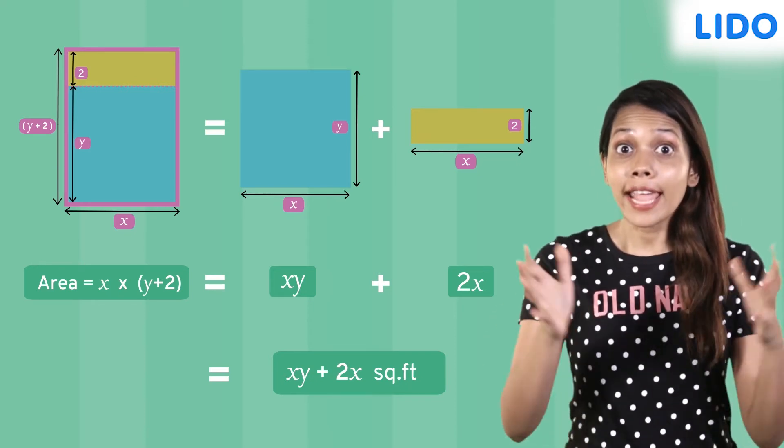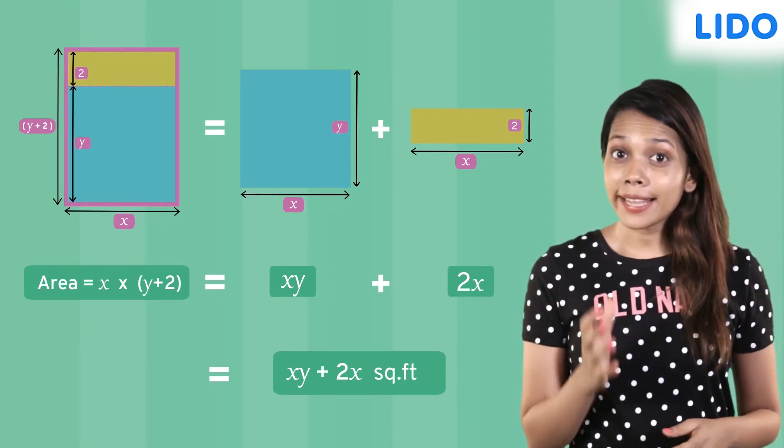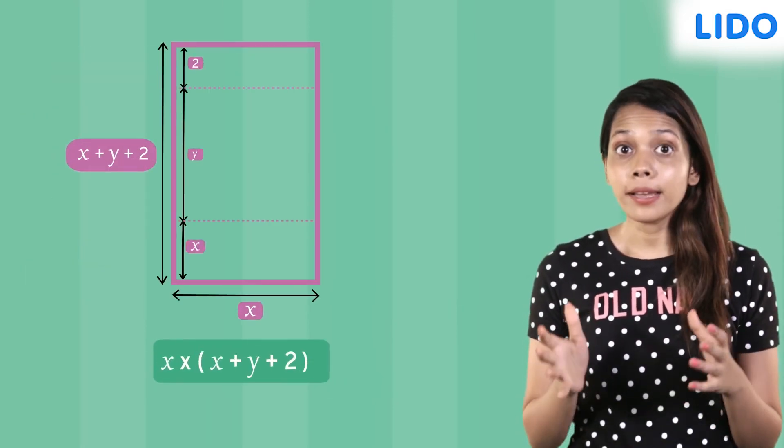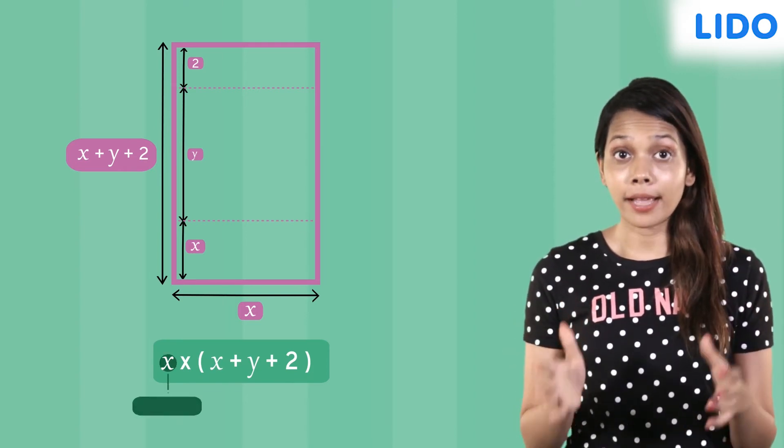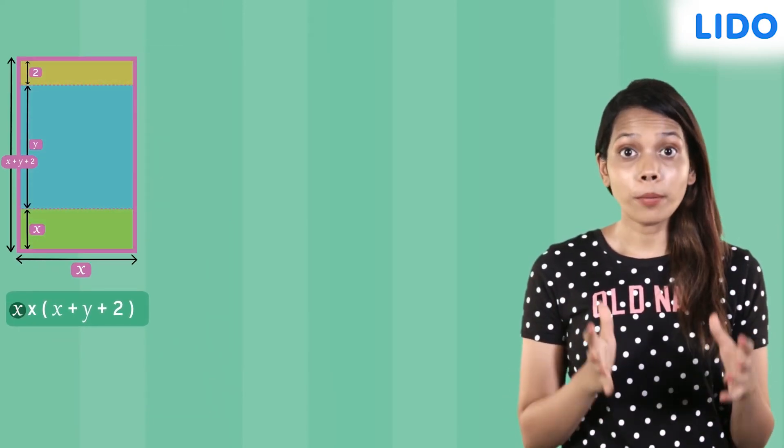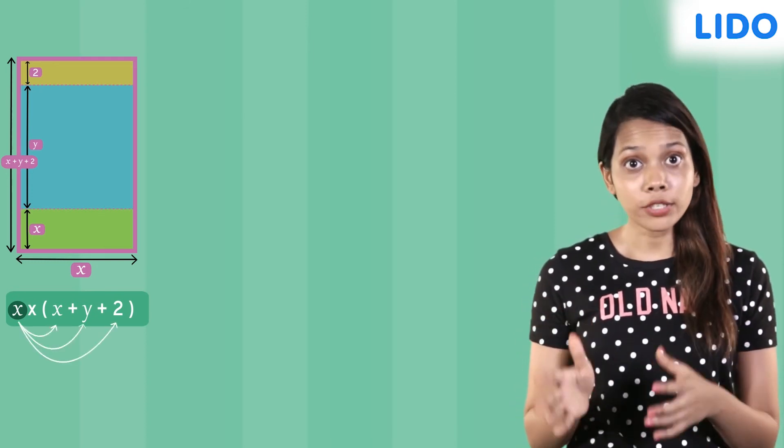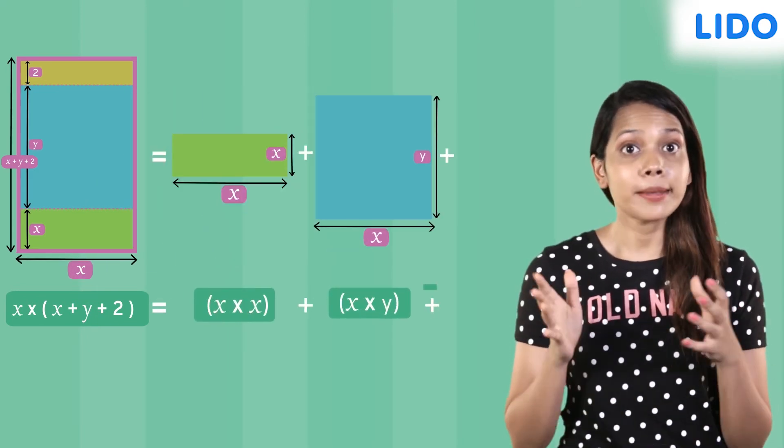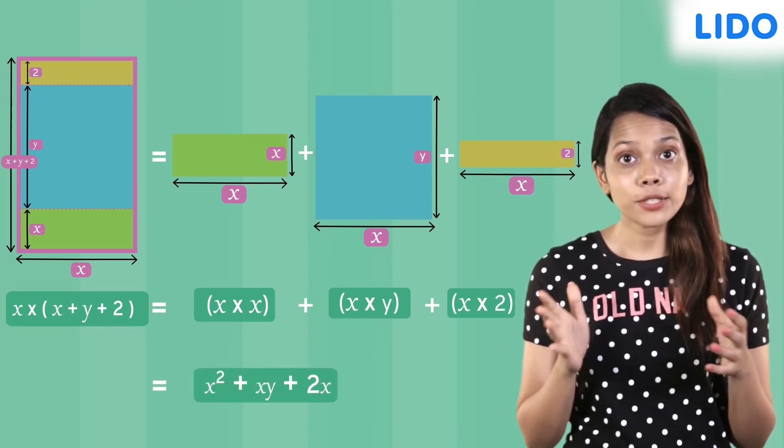The concept of distributive property can be extended to multiplying a monomial with any polynomial. Consider x multiplied by x plus y plus 2. This is a monomial multiplied by a trinomial. Applying the distributive property we multiply the monomial x with each term of the trinomial x, y and 2 separately to get x times x plus x times y plus x times 2. This simplifies to x square plus xy plus 2x.